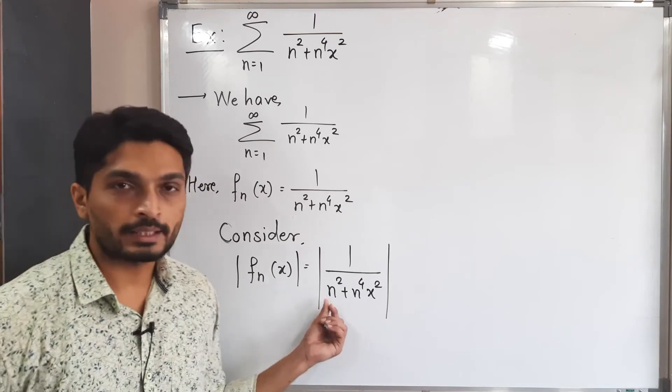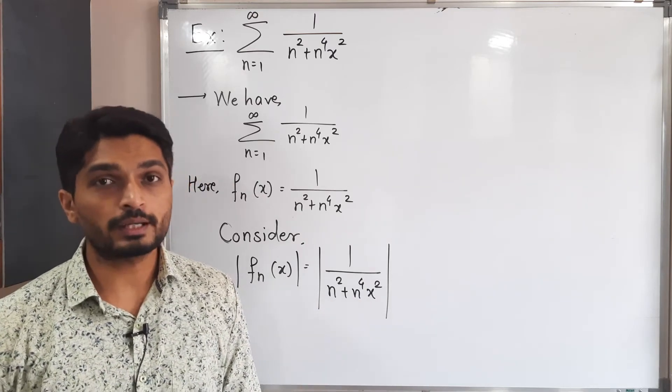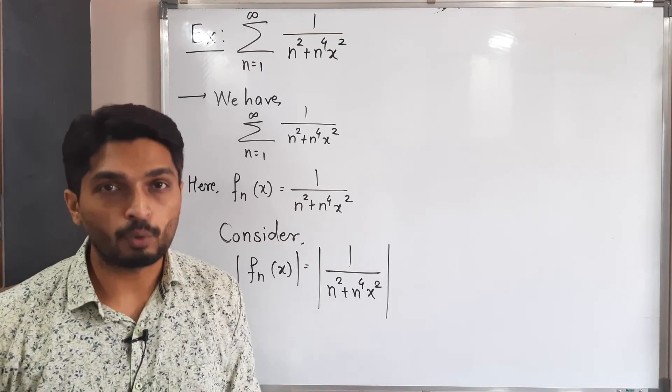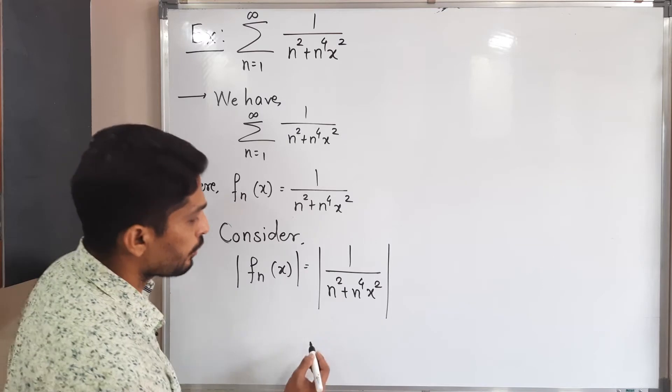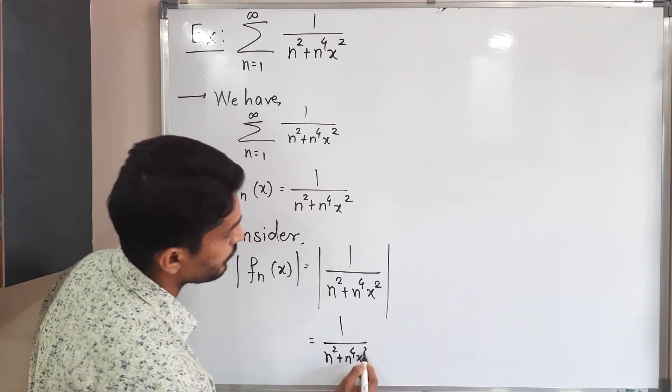Actually square, it has power is even, x square also there. So that's why these numbers cannot be negative. So it has no need of mod. So we can remove this mod and we will have 1 upon n square plus n raised to 4 x square.